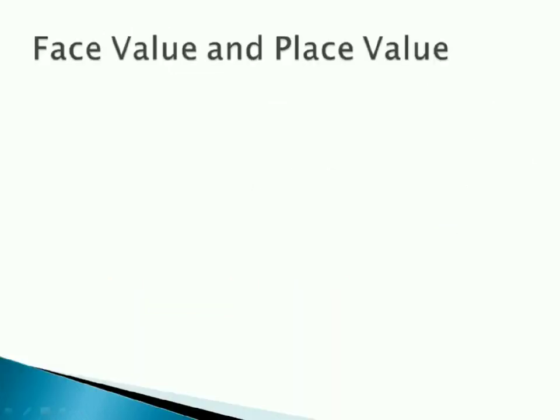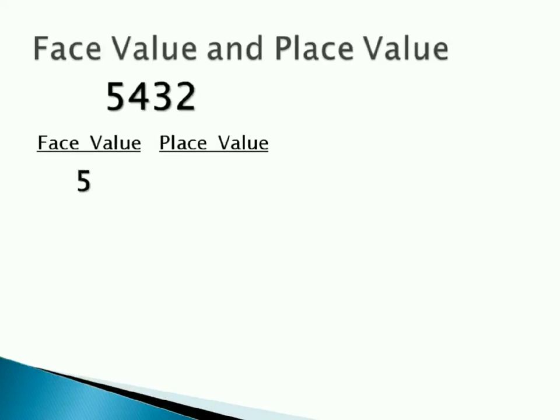So let's check face value and place value. We have 5432 on the screen. Face value will be same as the digit. For 5, it's 5. Place value will be 5 times 1000, that is 5000. As 5 is at thousands place, we have to multiply 5 with 1000.